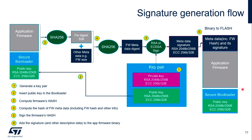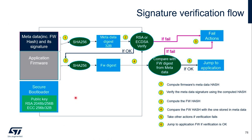The bootloader, including the public key, and the application firmware including the metadata, will be programmed to the flash. To verify the signature, the bootloader will first compute the digest of the metadata and verify the signature of the metadata itself. If that is okay, the bootloader will also compute the digest of the firmware and compare the computed digest with the one coming from the metadata. If that is also okay, the bootloader will jump to the application. If anything goes wrong in any of the verification steps, further action will be taken as an error handler.